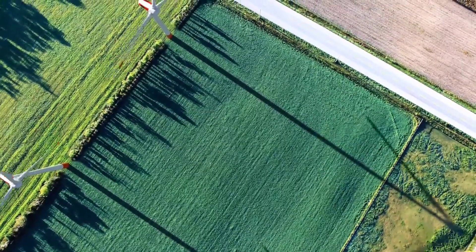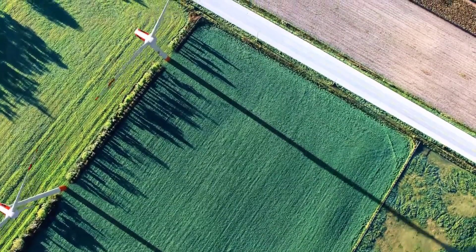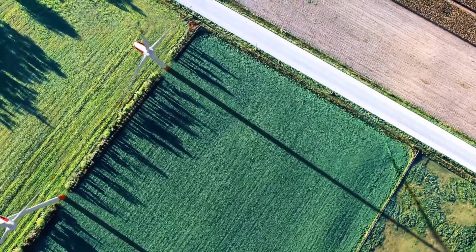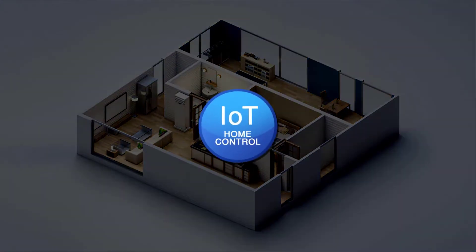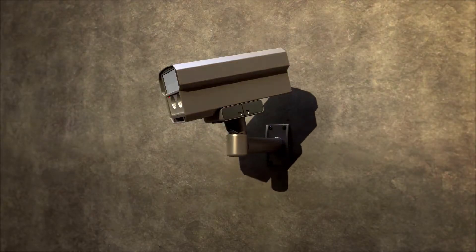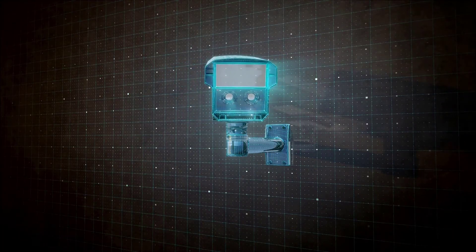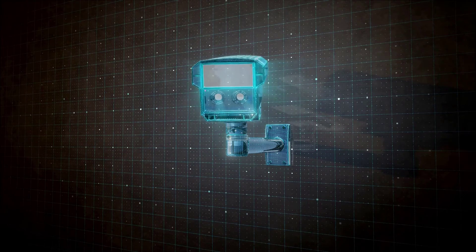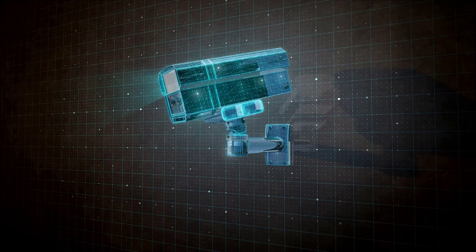In Consumer Internet of Things, it largely consists of commercial devices and associated services geared towards home or personal use, such as connected thermostats or appliances. While the basic IoT concepts apply, the scope of what the devices collect, how they manage and store data, and how the data is used may be much more limited than what you'd find in an enterprise environment. Consumer IoT is focused on turnkey device solutions that solve specific problems or enable new scenarios for individuals or homes.